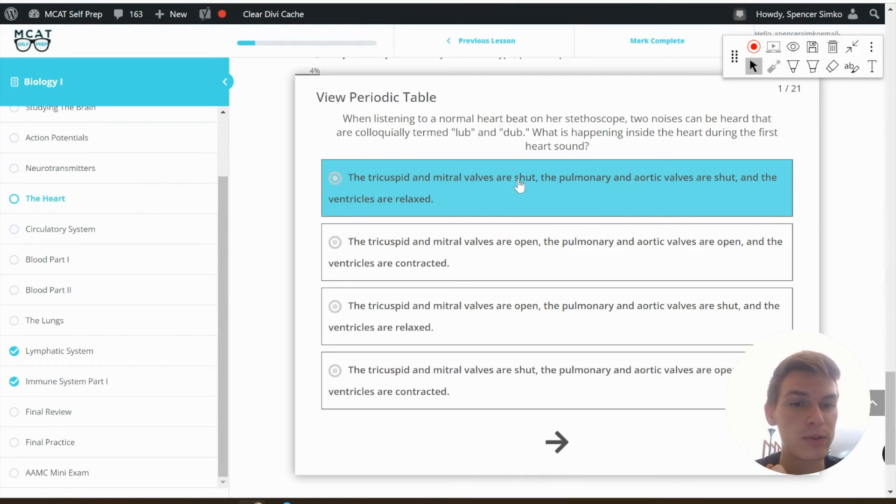The pulmonary and aortic valves are shut. That's not going to be true, because we need our blood to be flowing out of our ventricles. The tricuspid and mitral valves are open. That's not true, because the first heart sound is what closes them. The tricuspid and mitral valves are open. Still not true. I can just skip to the last one.